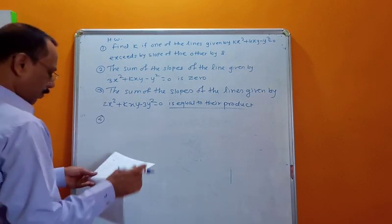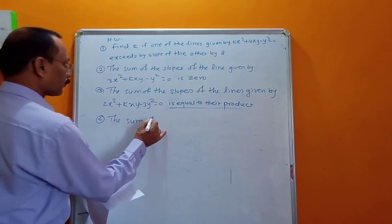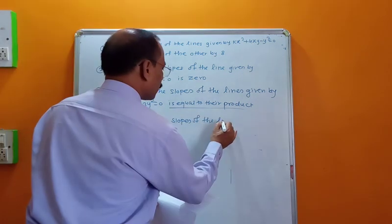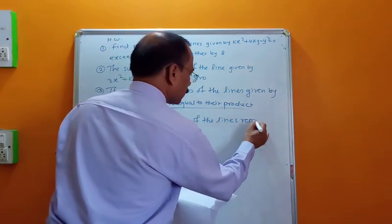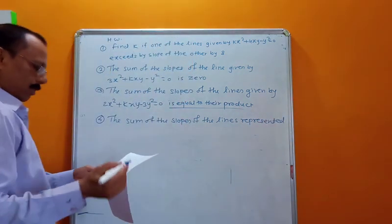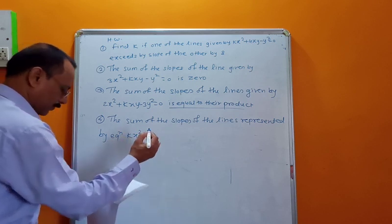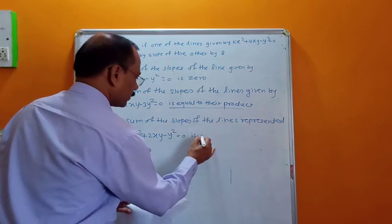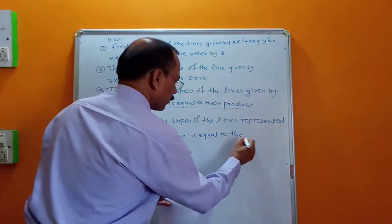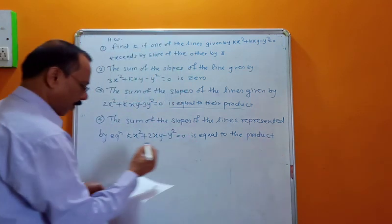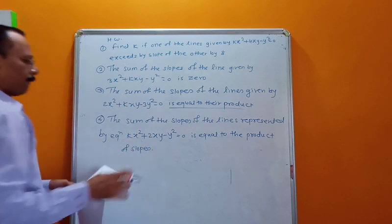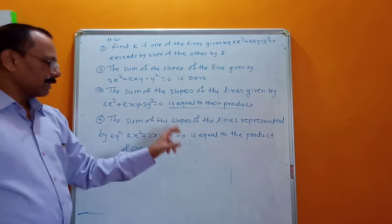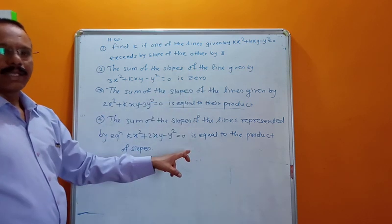Homework Problem 4: The sum of the slopes of the lines represented by kx² + 2xy − y² = 0 is equal to the product of the slopes. The condition is m1 + m2 = m1·m2. Solve the four examples by following the two worked examples.